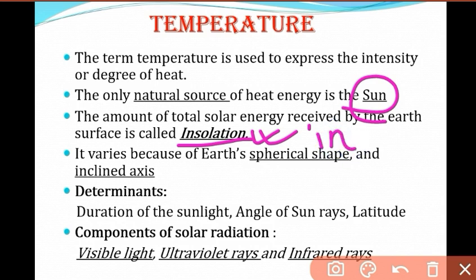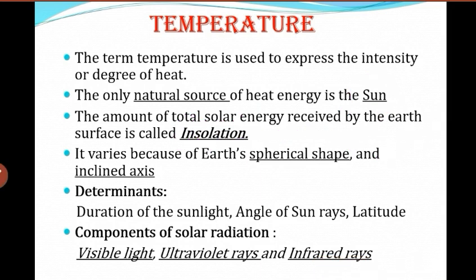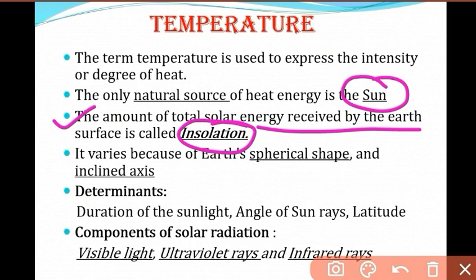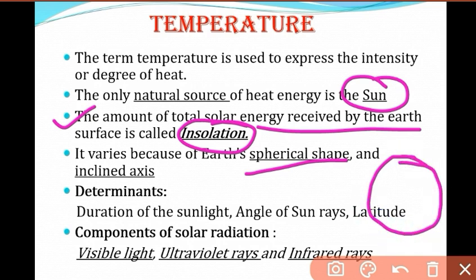Insolation stands for incoming solar radiation — the total amount of energy received by the earth. It varies because of the earth's spherical shape and its inclined axis. Spherical means round, shaped like a sphere. A circle is two-dimensional, but a sphere is three-dimensional. So the shape of the earth is called its spherical shape.